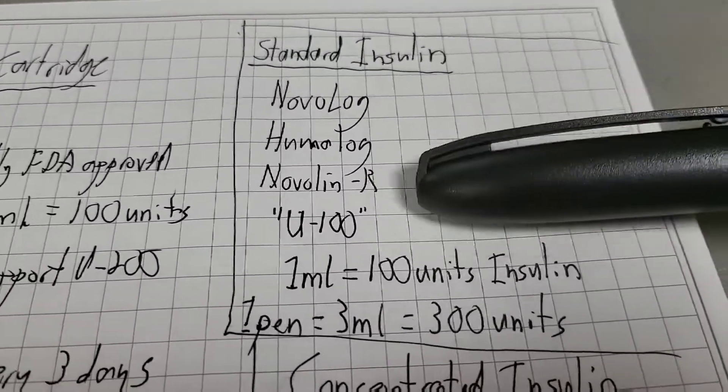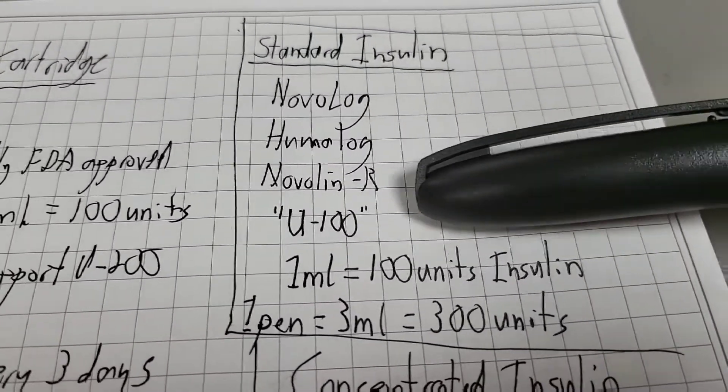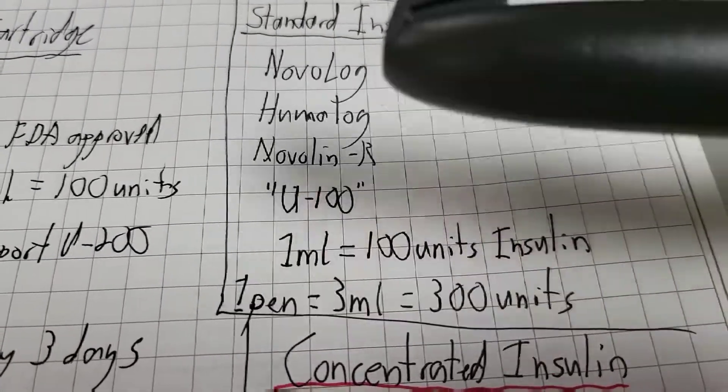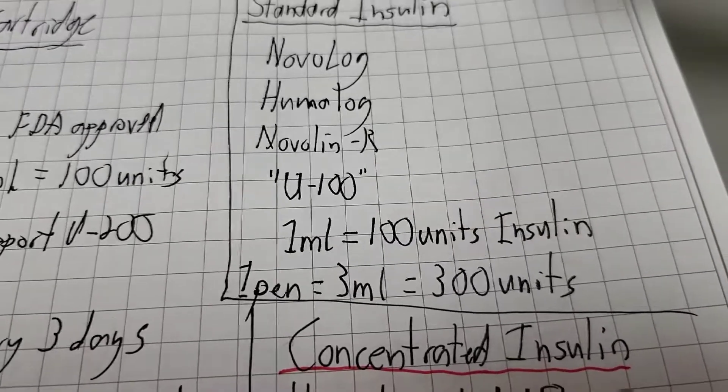The standard insulins are all considered U100. U100 means one milliliter contains 100 units of insulin. One pen, three milliliters, 300 units.